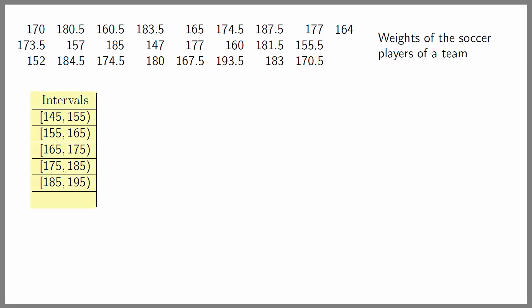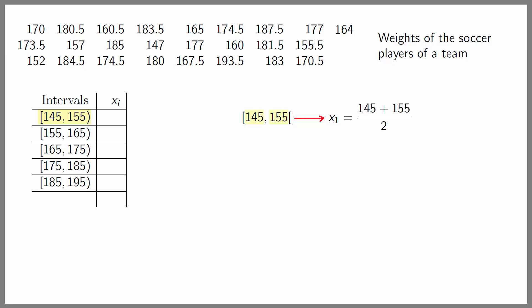In the first column we put the intervals we've just identified. In the second column we put the class marks X sub i of each of the intervals — that is the midpoint, which is the sum of the extremes of the interval divided by 2. For the first interval [145, 155), the class mark X sub 1 is 145 plus 155 divided by 2, which is 300 over 2, which equals 150. So we put 150 in the second column next to the interval [145, 155).